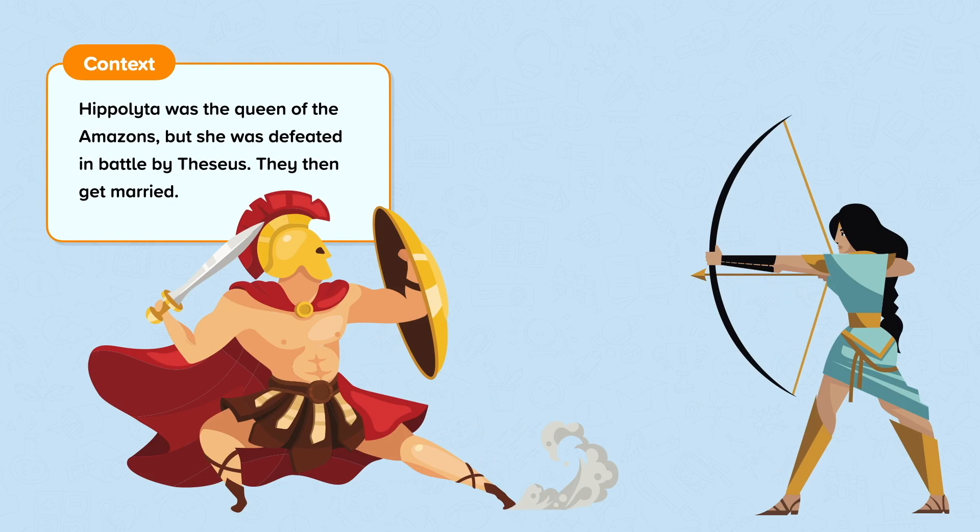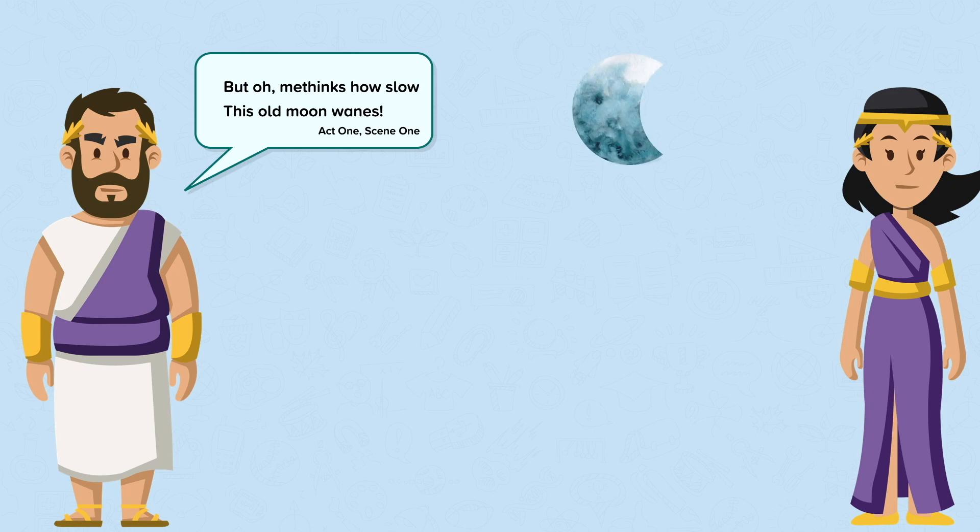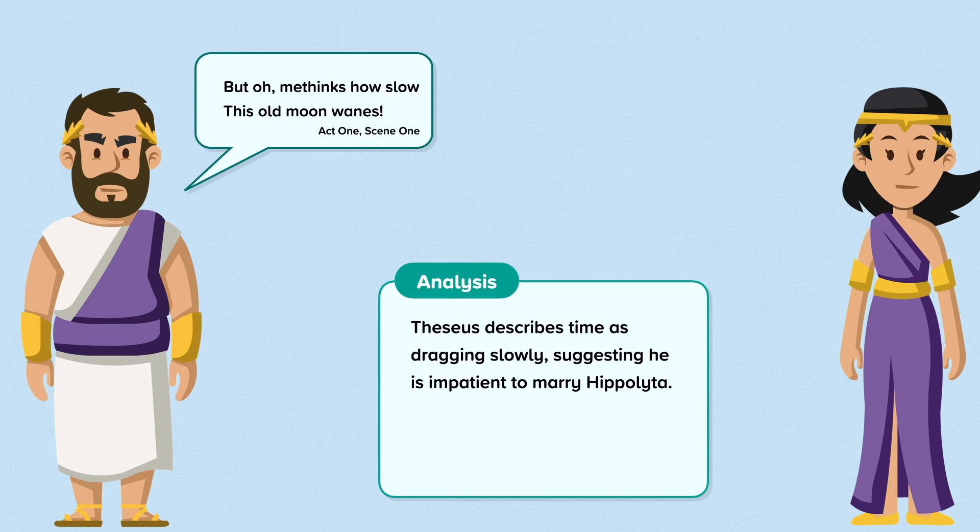Theseus is impatient to marry and says, "But oh, methinks how slow this old moon wanes." When he says the moon is waning slowly, he means that time is passing slowly. Theseus describes time as dragging slowly, suggesting he's impatient to marry Hippolyta.